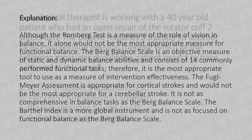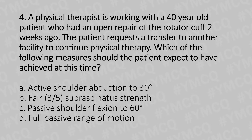Now let's move to our fourth question. A physical therapist is working with a 40-year-old patient who had an open repair of the rotator cuff two weeks ago. The patient requested a transfer to another facility to continue physical therapy. Which of the following measures should the patient expect to have achieved at this time? Option A: Active shoulder abduction to 30 degrees. Option B: Five supraspinatus strength. Option C: Passive shoulder flexion to 60 degrees. Option D: Full passive range of motion.